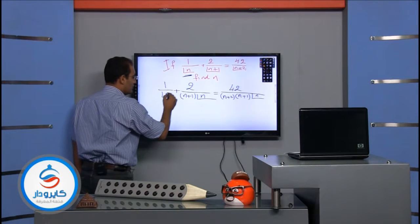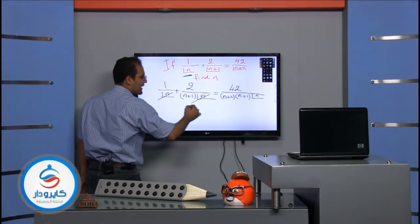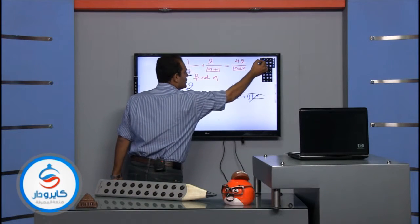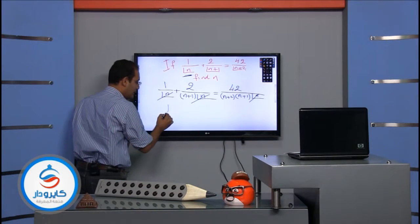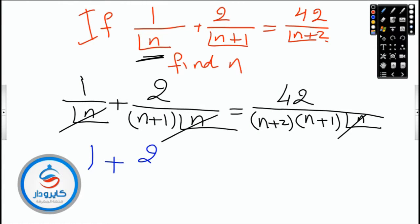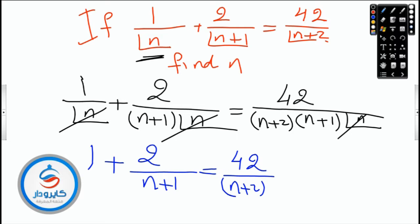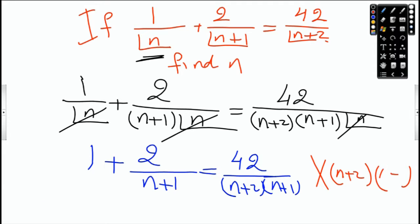All of them are in the denominator, so factorial n cancels with factorial n. What is left is: one plus two over n+1 equals 42 over n+2 times n+1. I want to get rid of the denominators — multiply everything through by n+2 times n+1.